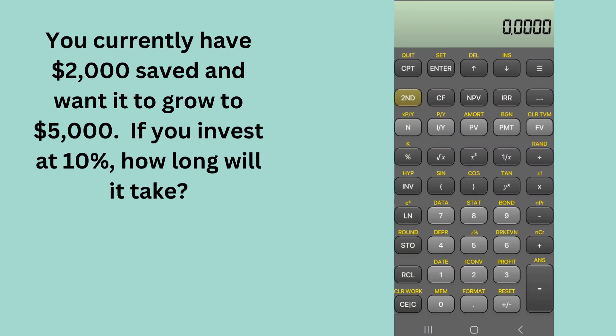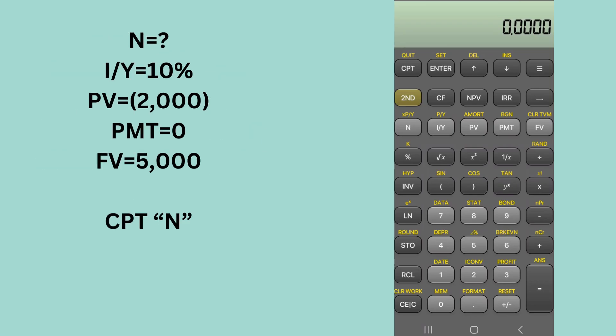In this problem we are solving for n. What we're trying to figure out is: right now you have $2,000 saved — how long is it going to take that $2,000 to grow into $5,000 at 10% annual compounding interest? This is one of those problems where we're asking how long it will take for this money to grow into the $5,000 that we are desiring or needing. So in this case, n is what we're trying to calculate.